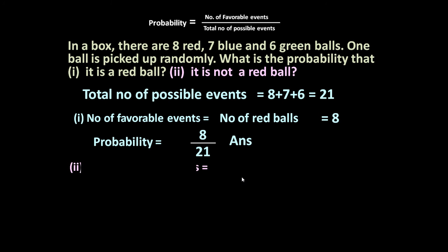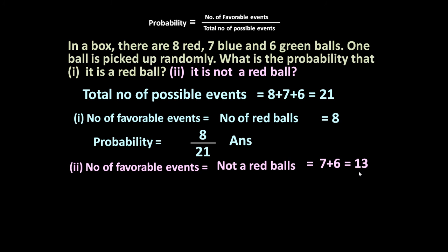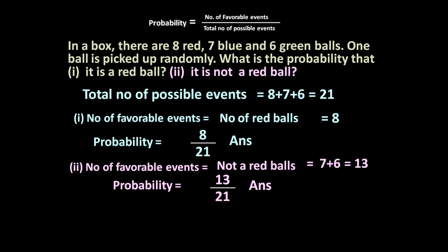For Part 2, it is not a red ball. Number of favorable events will be not a red ball, meaning it will be either a blue or a green ball. There are 7 blue and 6 green balls, giving 13 balls. So probability = 13 divided by total possible events 21, which remains the same since the box is the same. Answer: 13 upon 21.